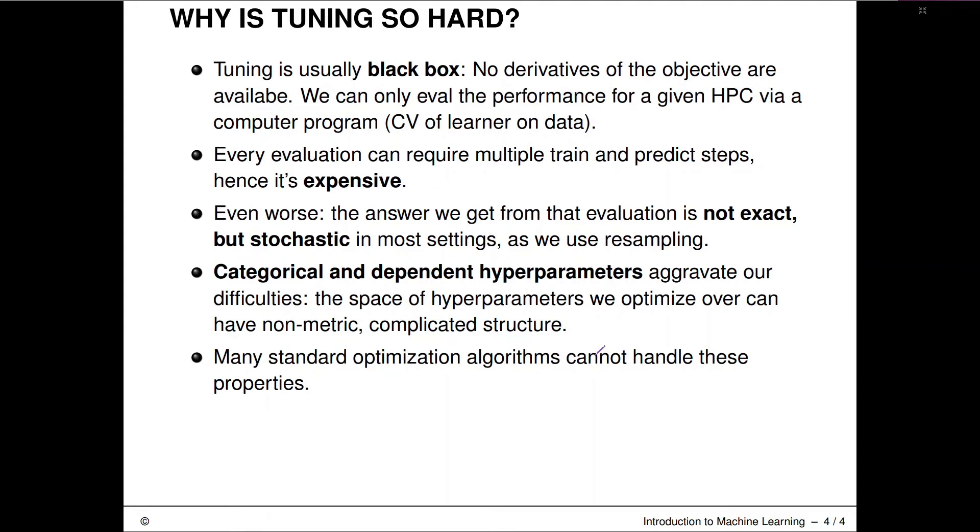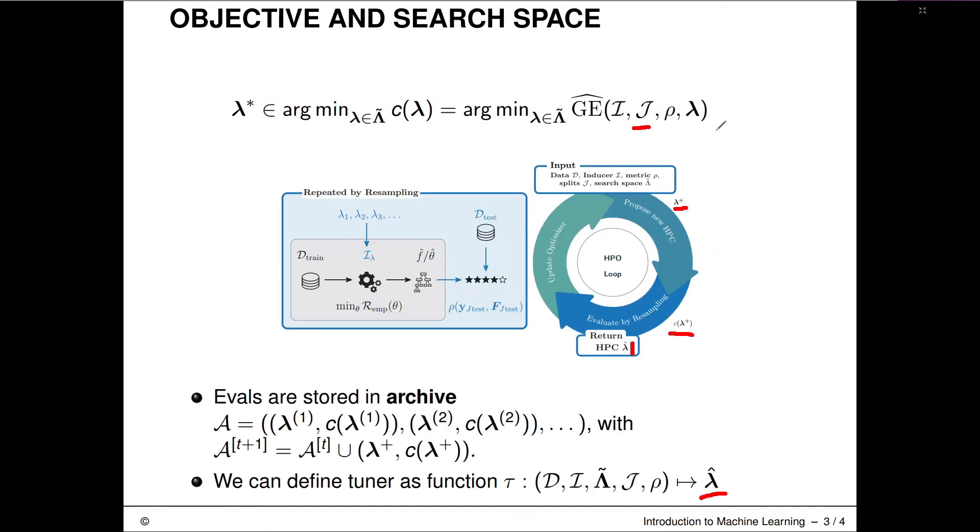So our first insight is that this C function is usually probably a black box function. So we could also call that a derivative-free function. So usually no derivatives of that C function are available in analytical form. We can't easily, as a formula, input them into our optimization algorithm, which means we can't really rely on gradients or Hessian matrices. So first order or second order information and many classical numerical optimization algorithms are of such a nature and require that information.